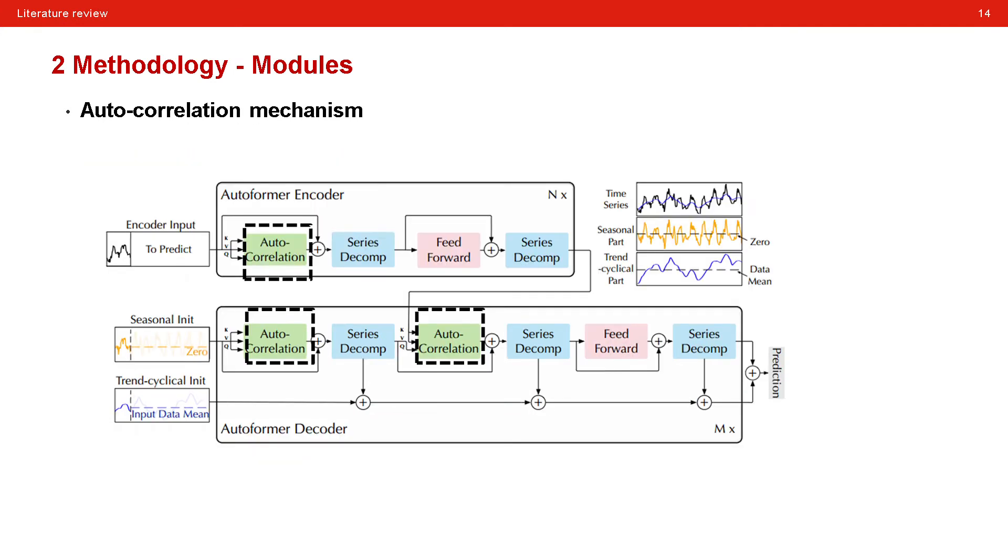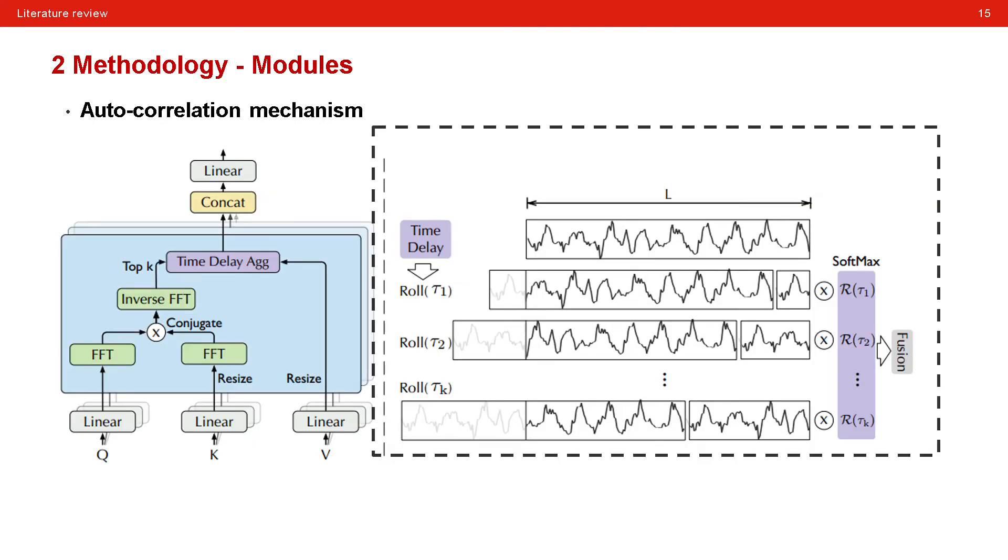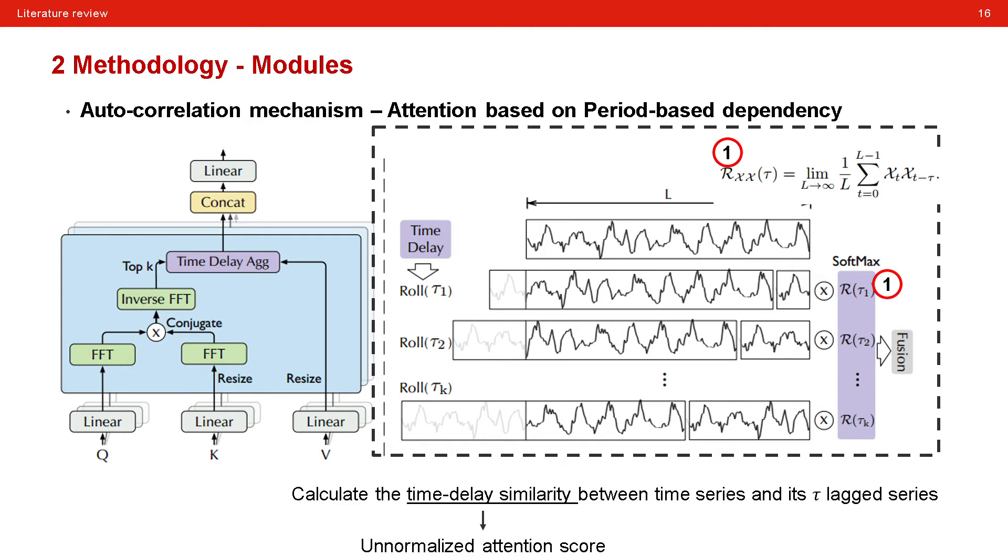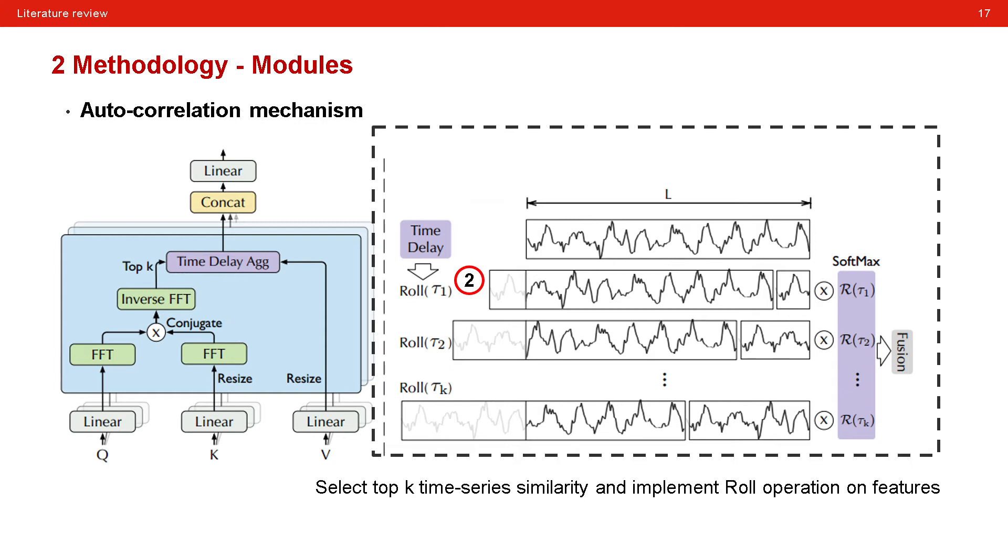Another inner block is called auto-correlation, which should be the most valuable contribution of this study. This is the detail of this block. The right part illustrates the basic idea of the auto-correlation mechanism. What they want to achieve can be regarded as a modification of traditional attention block. As you can see, they suggest a period-based dependence identification by calculating the time delay similarity between time series and shifted lag time series. And the result can be regarded as a normalized attention score to highlight the period dependency with respect to different time lag. Then, similar to the attention mechanism, they select top-k time series similarity and implement roll operations on features. And then, they aggregate the sub-series by soft mass normalized value. Notably, the roll operation is kind of special in this figure and I will introduce later.